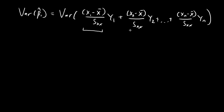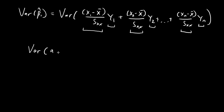Note that all these x terms are constants, and the y terms are the random variables. In order to evaluate the variance of a term like this, I'm going to introduce a formula — I won't prove it, but you can look up the proof. I'm going to invoke and use this result.